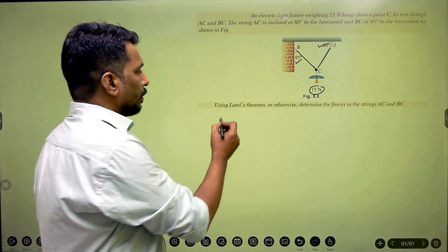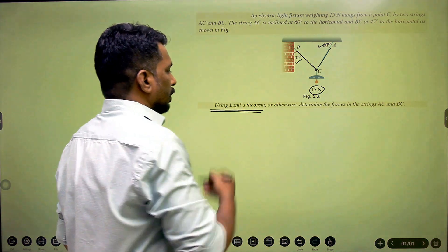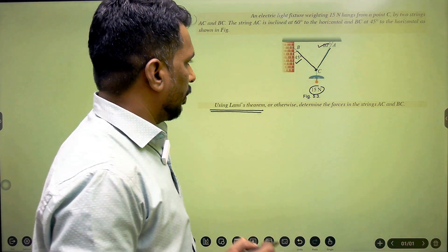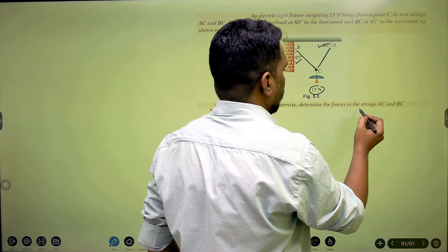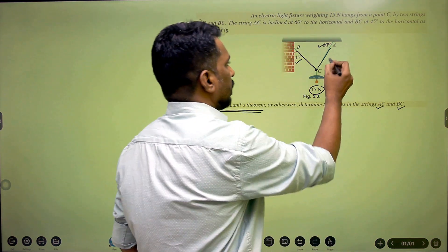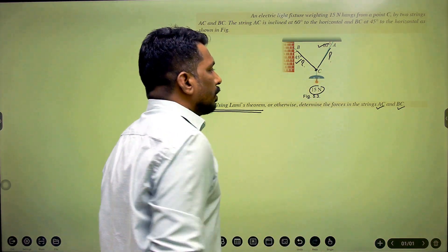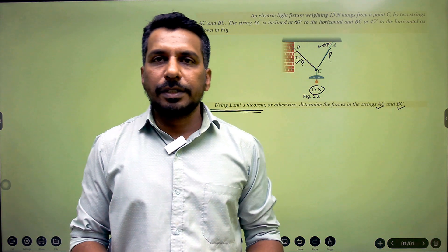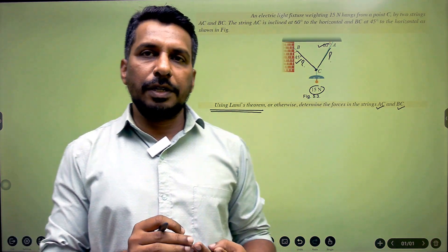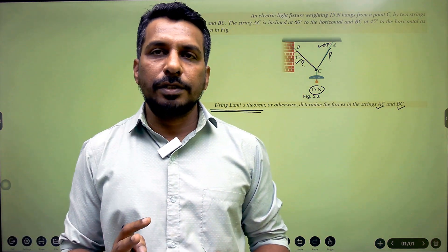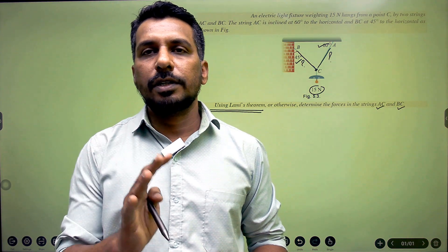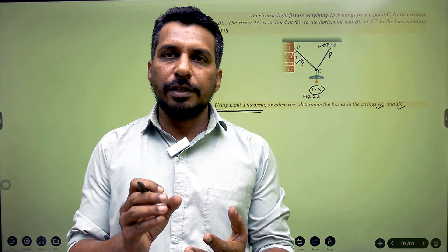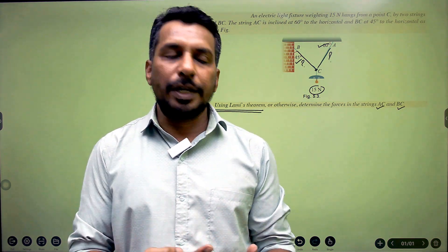They ask us to use Lamy's theorem to solve the problem and determine the forces in the strings AC and BC. To apply Lamy's theorem, we require three coplanar concurrent forces, so we have to find the point at which three forces pass through it.